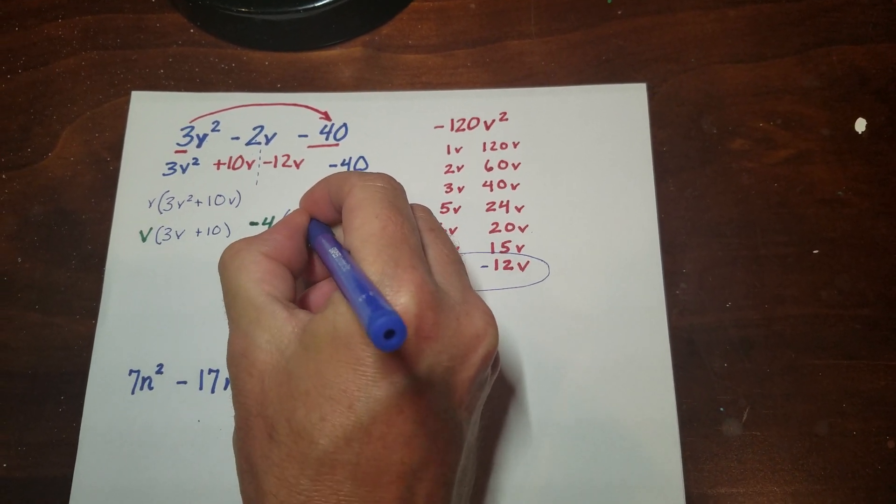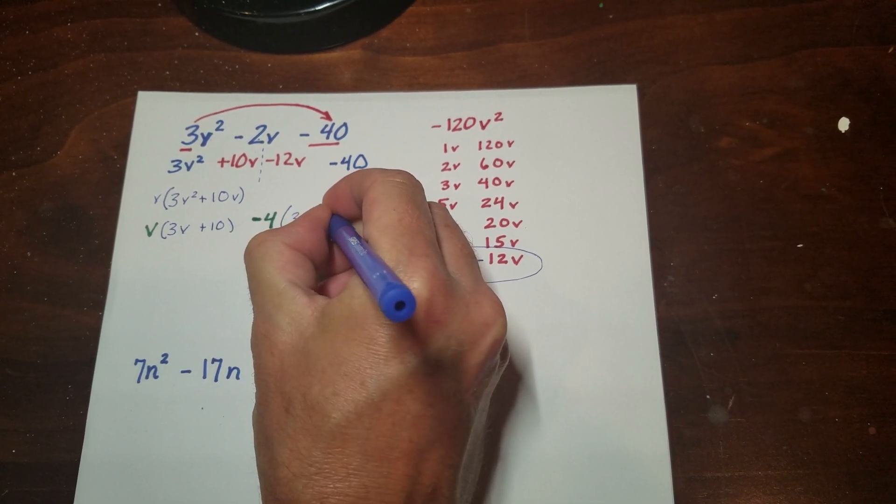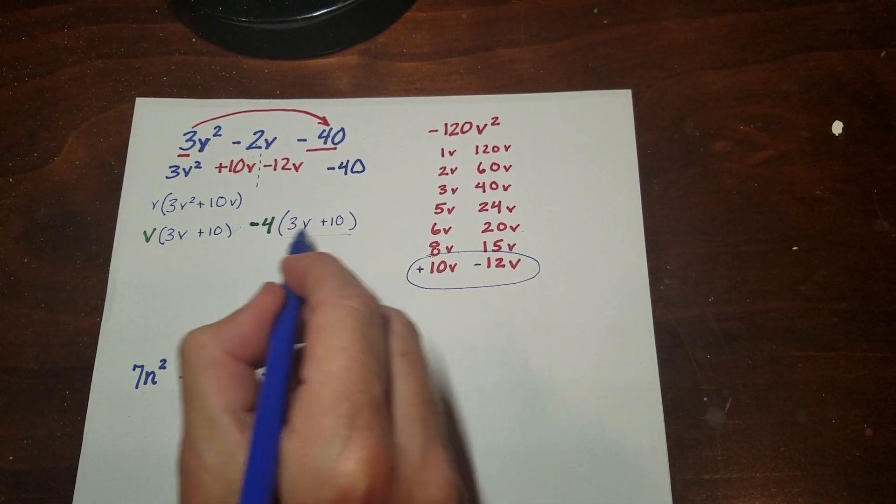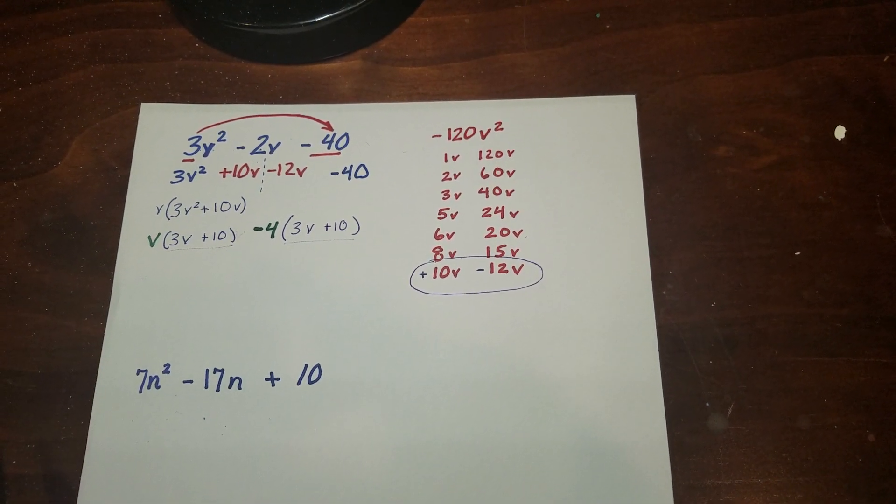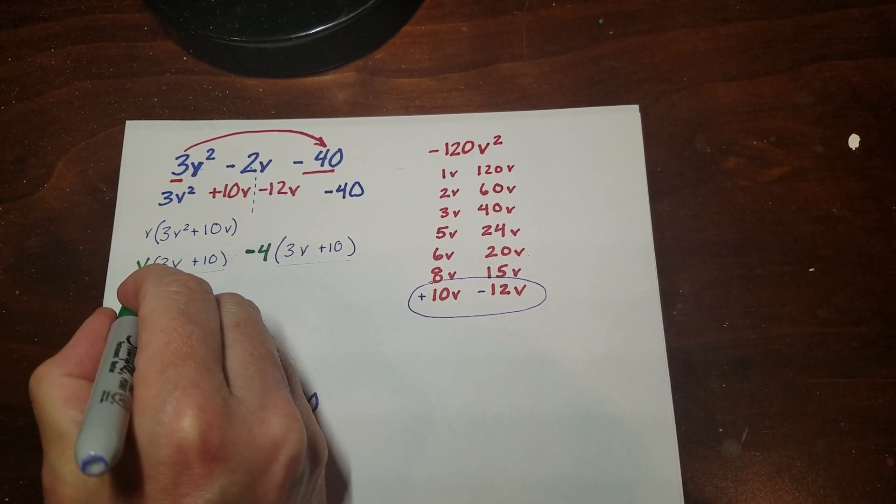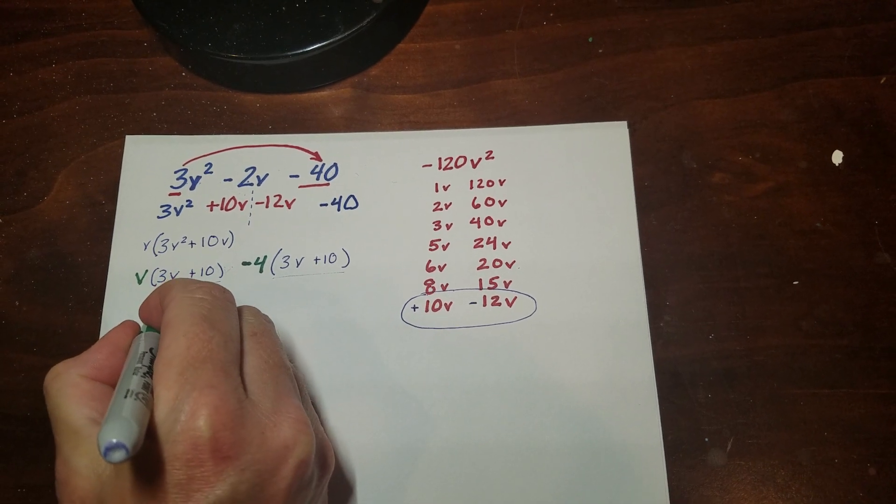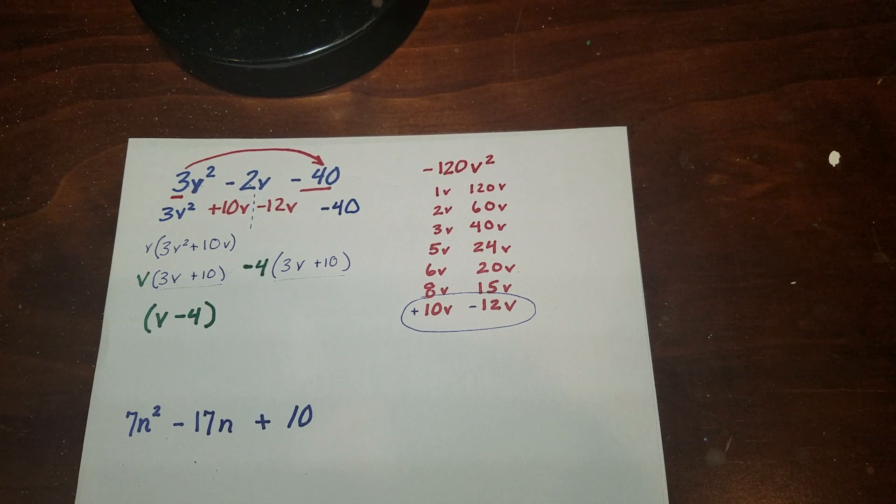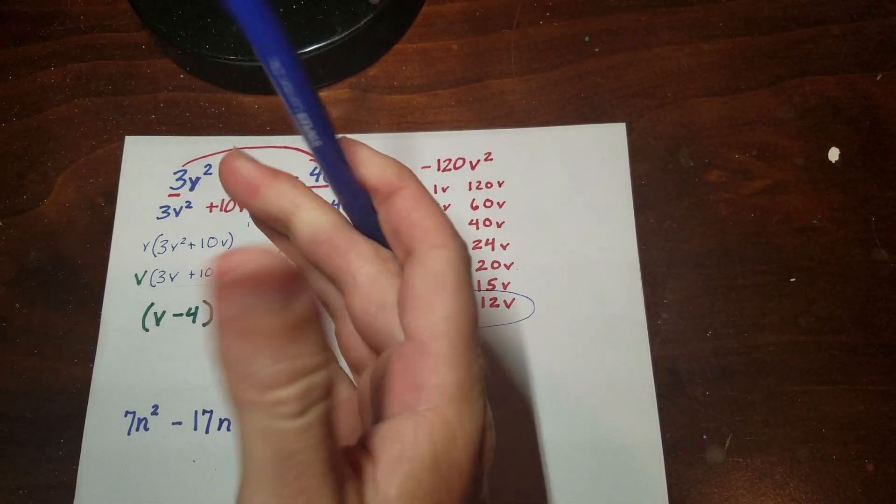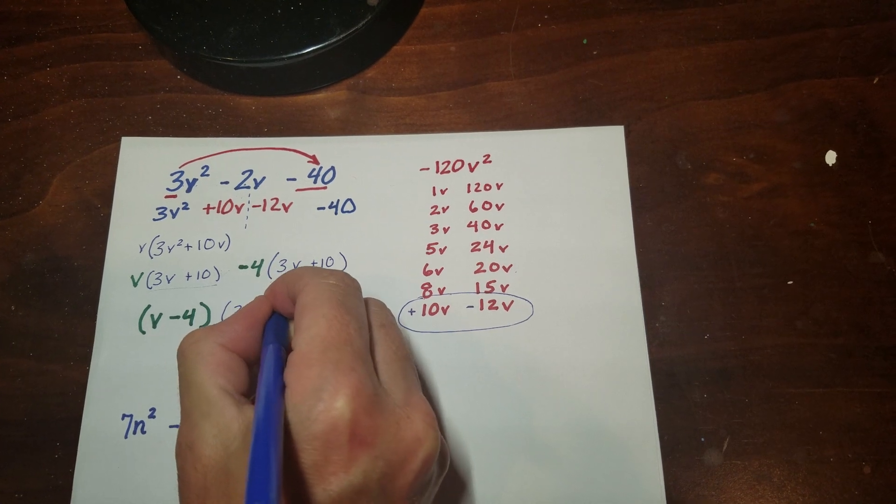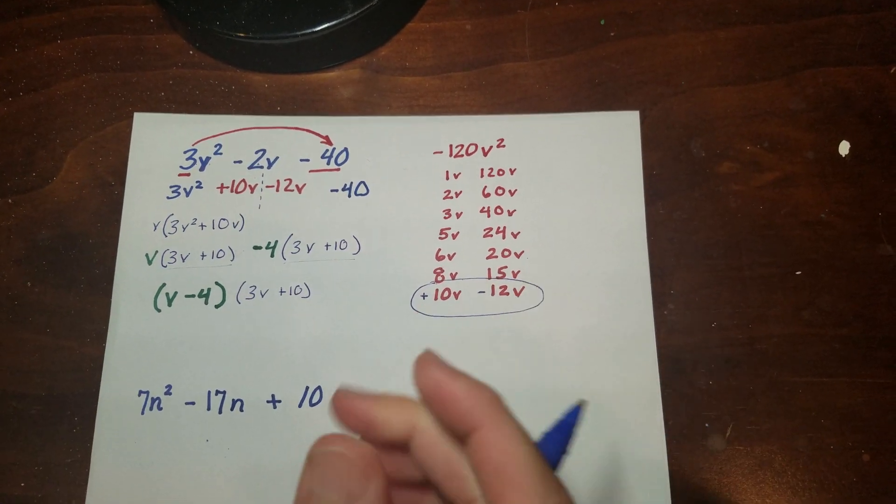I have a 3v plus 10. So what you'll notice is that this and this are exactly the same. And that's because that's one of the multiples. So when I fully factor this, I have the v minus 4. That's one of my binomials. And my other binomial is the 3v plus 10. That's the answer. That's it.